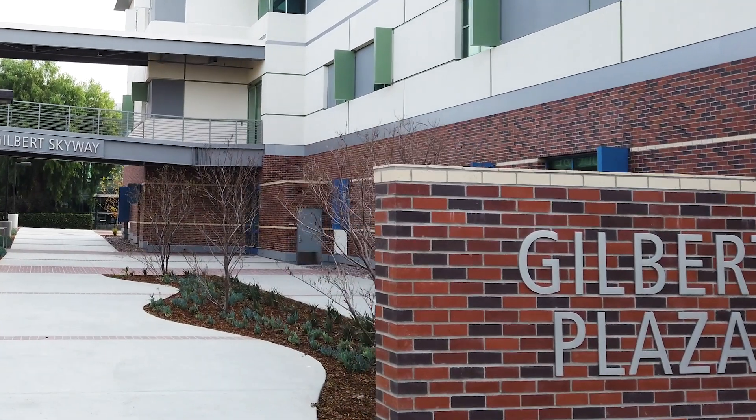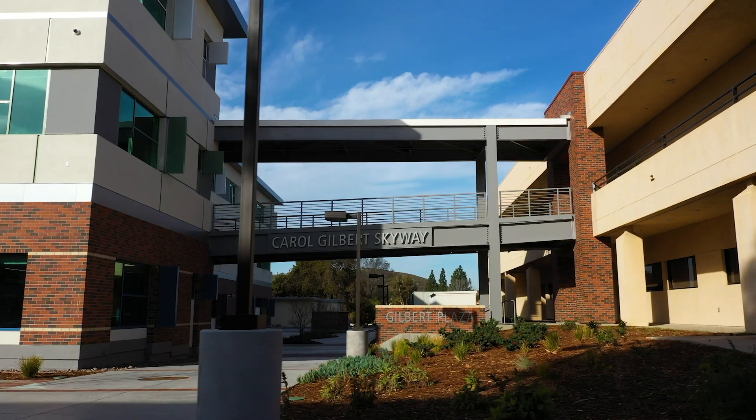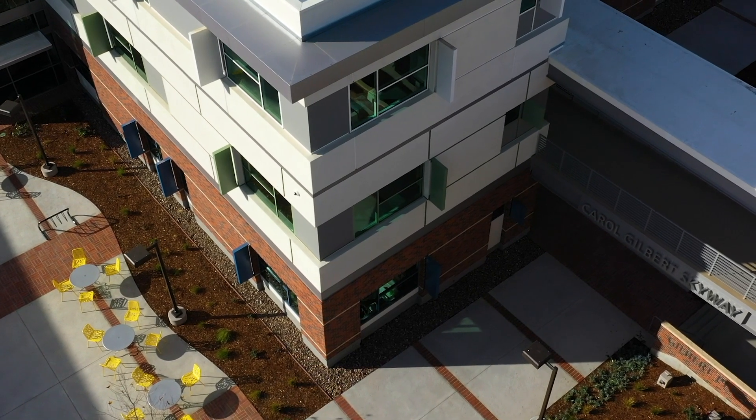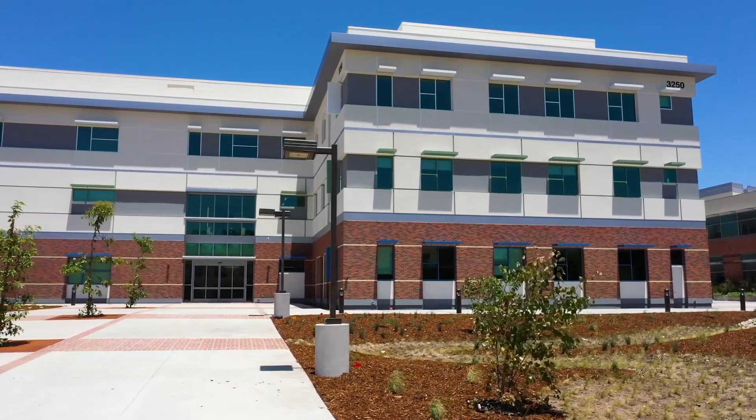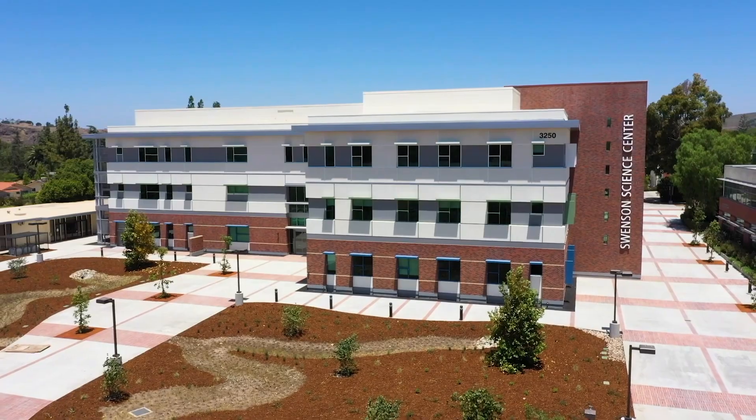The Gilbert Plaza connects the Swenson Science Center to the Amundsen Science Building via the Carroll Gilbert Skyway. In the areas around the building, there are tables and chairs for you to do your homework or just hang out in the fresh air. The Swenson Science Center is ready to showcase your research. We hope to see you in the lab soon.